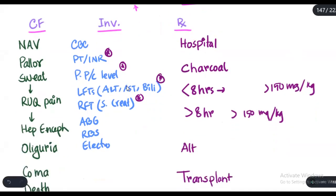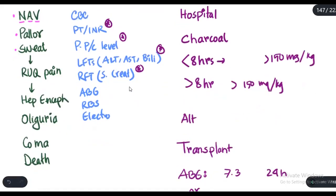So the clinical features initially are mild such as nausea, anorexia, and vomiting. Then the patient can develop pallor and sweating. If the liver damage is significant, the patient will have pain in the right upper quadrant.